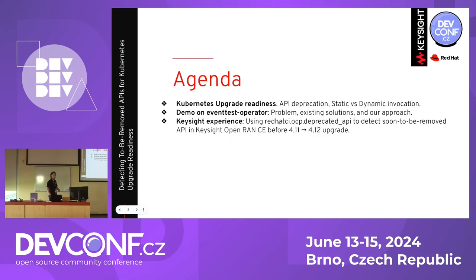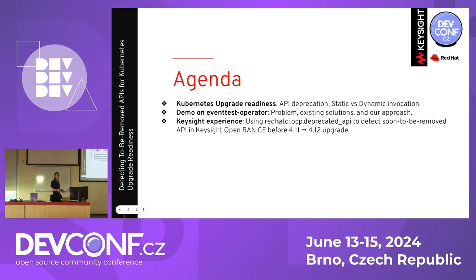Let's go to the agenda. We'll discuss Kubernetes upgrade readiness and how it's important to detect all deprecated APIs in advance to avoid problems after migration. This is a problem you'll face if you're running something at scale, or even a relatively simple application with a planned development cycle — you have to plan in advance. I'll run demos on an event test operator, which is a demo operator that sends specific events using a specific Kubernetes API.